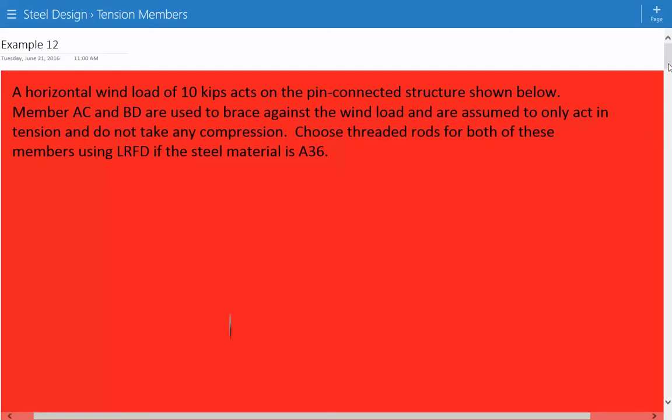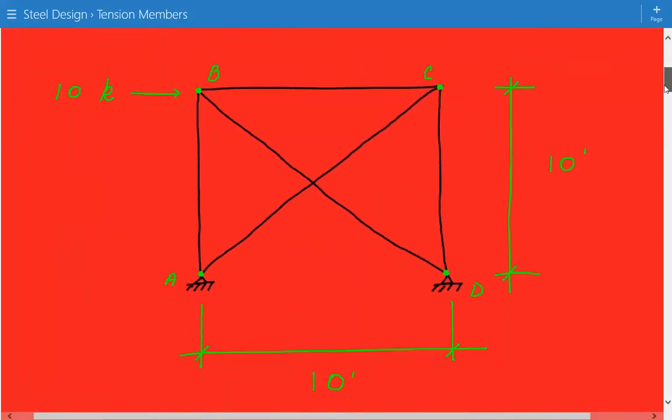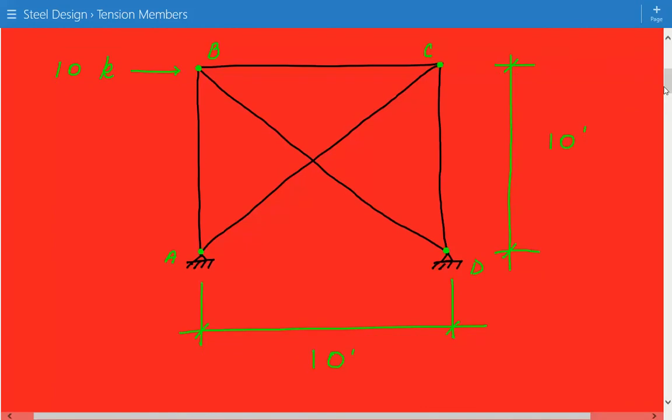So here's our figure of this pin-connected structure. We have four joints A, B, C, D, and we have a horizontal wind load acting at joint B. Member AC and the diagonal braces AC and BD take only tension and do not take any compression. We have to choose a threaded rod size for these members, AC and BD, the diagonal braces.